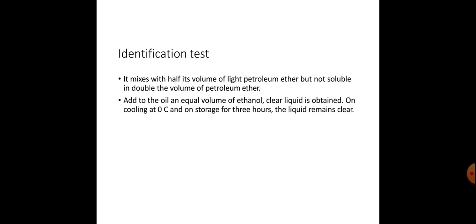Identification test. It is mixed with half its volume of light petroleum ether but is not soluble in double the volume of petroleum ether. Second test: add the oil with an equal volume of ethanol; a clear liquid is obtained. On cooling at 0 degrees Celsius, on storage for 3 hours the liquid remains clear. This confirms the oil is castor oil. Castor oil is the only fixed oil which is soluble in alcohol; no other oil is soluble in alcohol.